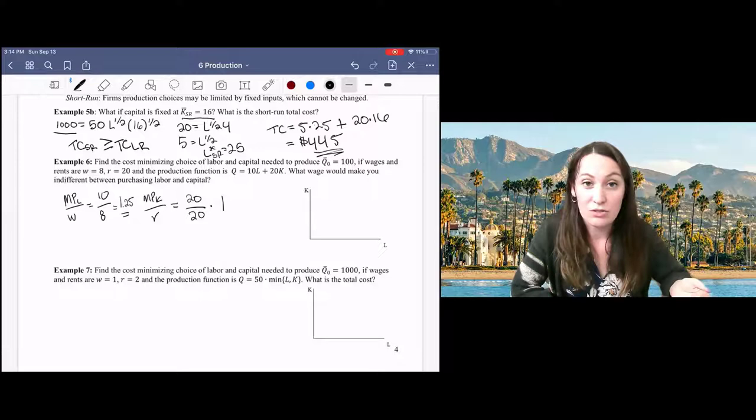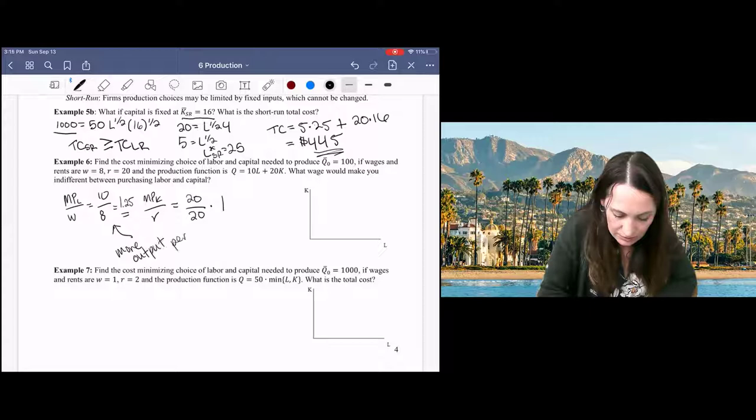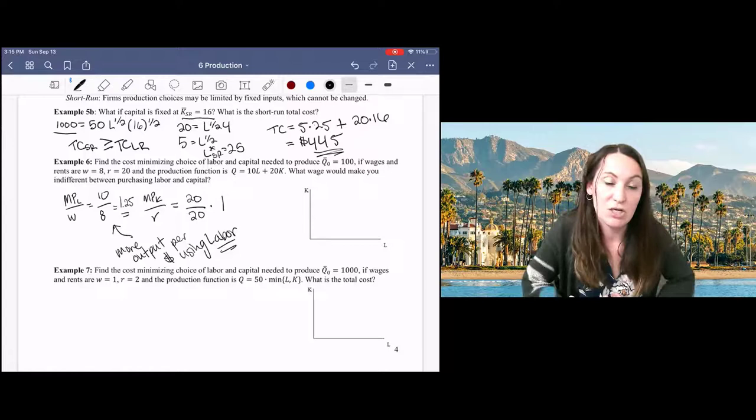So we get more output per dollar using labor than we do using capital. And that's true for any level of production. And so we will simply just use labor instead of capital in this production process.